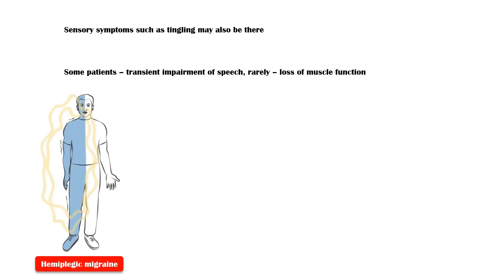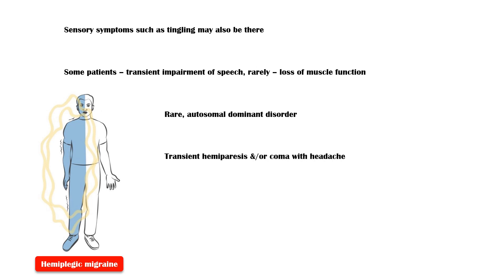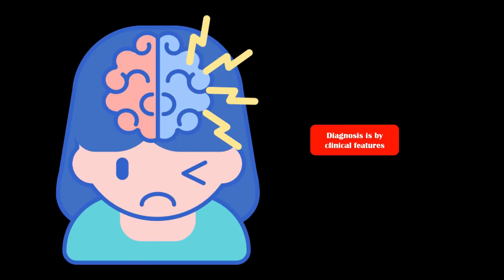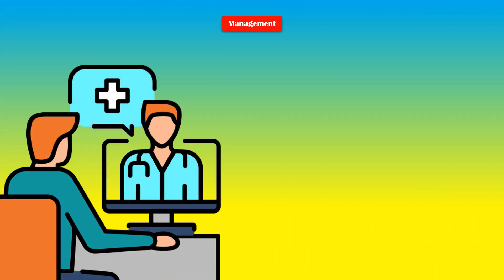Some patients may experience transient impairment of speech and rarely loss of muscle function. There is another rare type of migraine called hemiplegic migraine. It is a rare autosomal dominant disorder characterized by transient hemiparesis and/or coma with headache. Some individuals will also have permanent cerebellar signs such as episodic ataxia. Suggestive clinical features alone are sufficient to make a diagnosis of migraine.